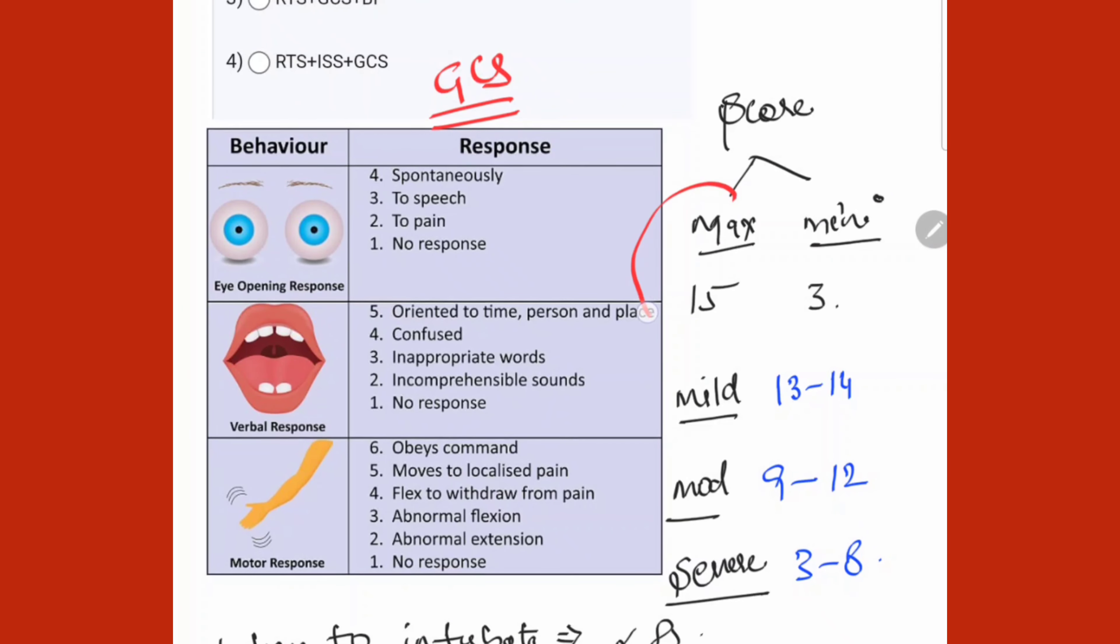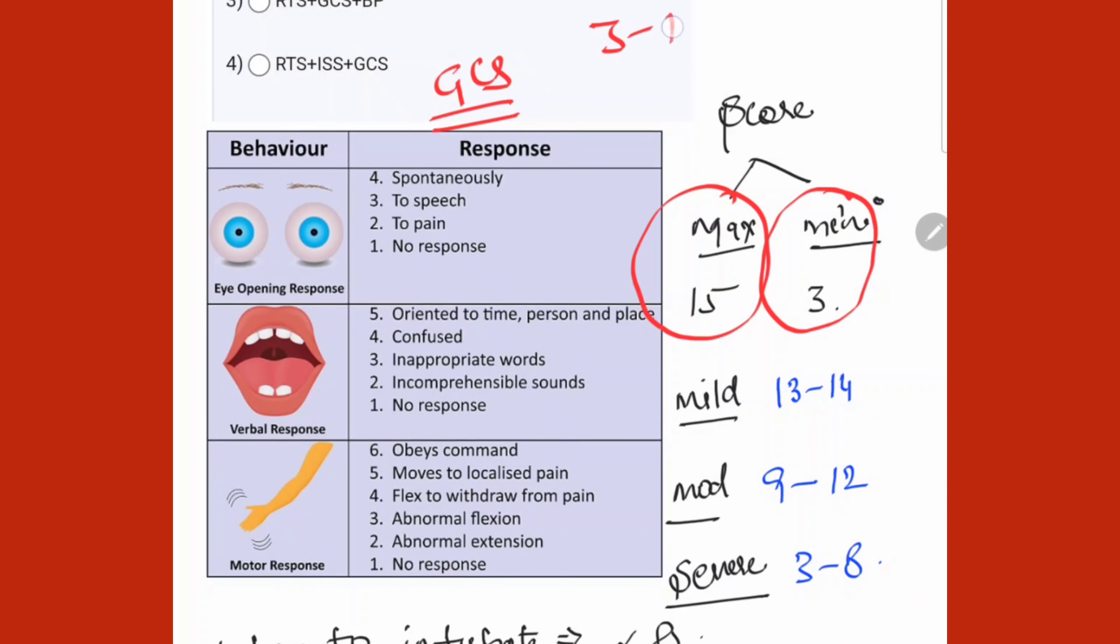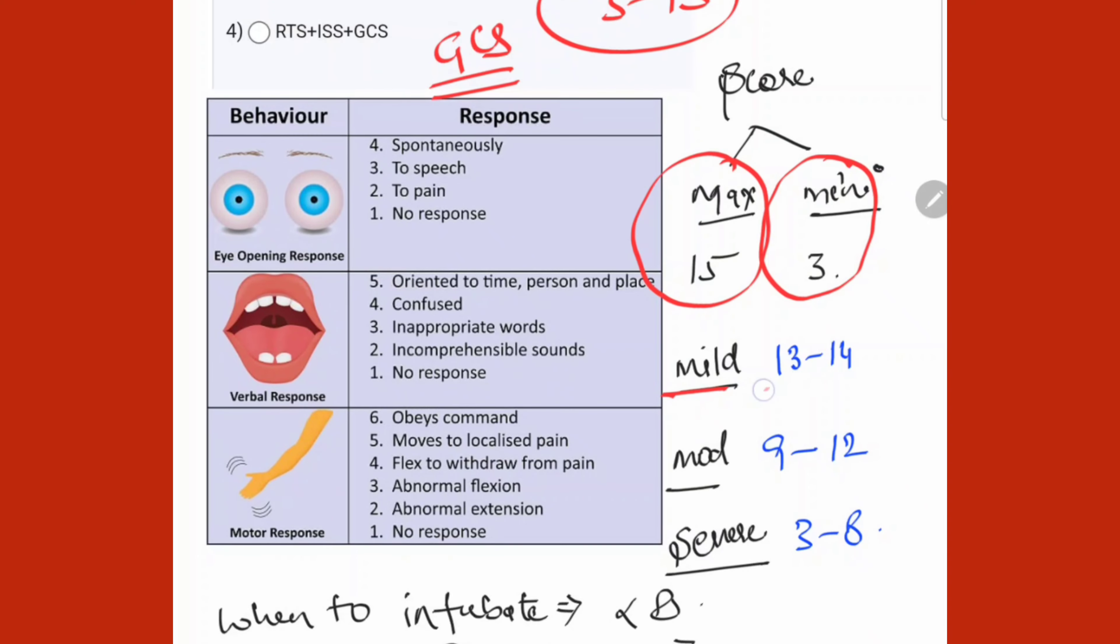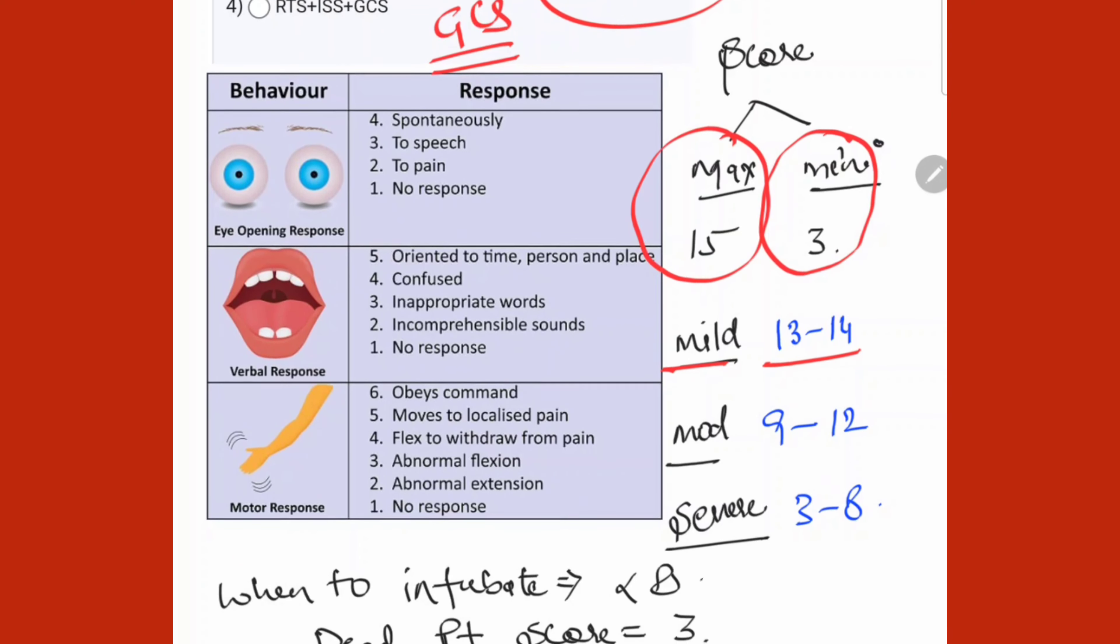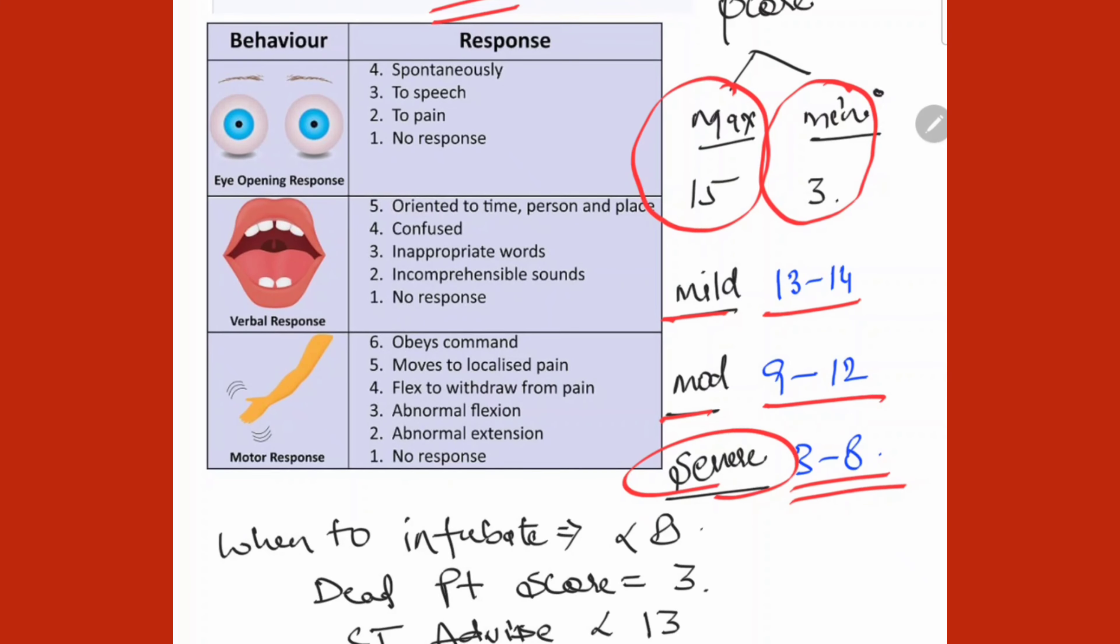Come to GCS. GCS means maximum score is 15 and minimum is 3. So range is 3 to 15. Mild means 13 to 14. If range is coming, we call it mild. Moderate means 9 to 12, and severe means 3 to 8. Now what questions come?